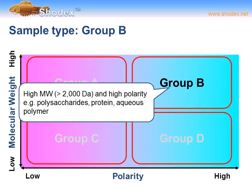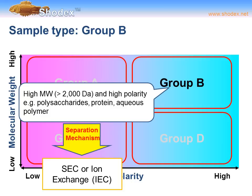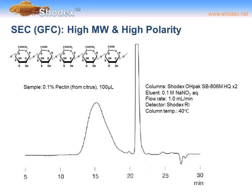Sample type group B comprises high molecular weight, high polarity compounds — most often above 2,000 Daltons. Examples include polysaccharides, some proteins, and aqueous polymers. The separation mechanism is size exclusion or ion exchange (IEC). We use the term GFC — gel filtration chromatography — instead of GPC because in this case we use an aqueous solvent, since the high molecular weight compound is also of high polarity and dissolves in water.